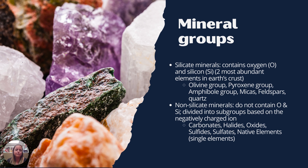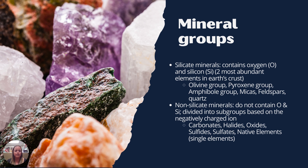We have two mineral groups: the silicates and the non-silicates. One contains silica and oxygen, and one does not. Within the silicates we have the olivines, pyroxenes, amphiboles, micas, feldspars, and quartz. Silicate minerals make up a large portion of our rocks — they are one of the biggest groups of rock-forming minerals. The non-silicates tend to be more independent and include native elements, sulfides, sulfates, oxides, halides, and carbonates. They are found in rocks, but are not as major players in the building blocks of rocks.